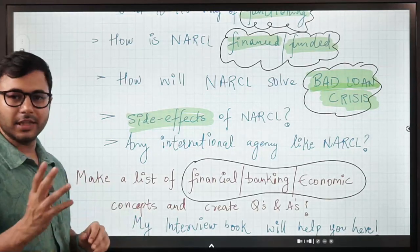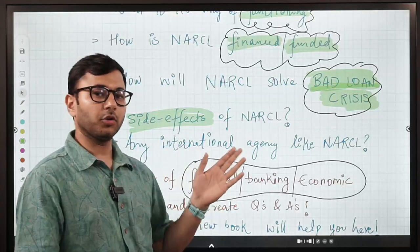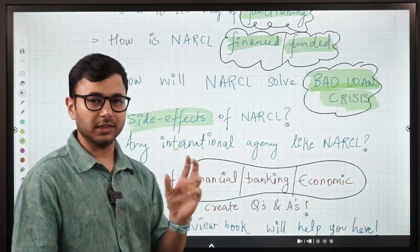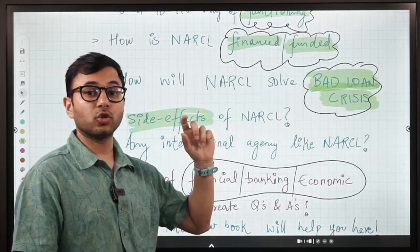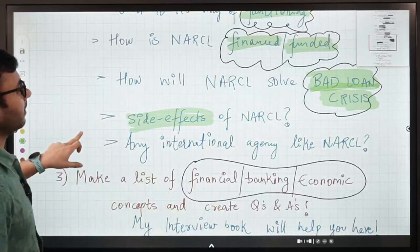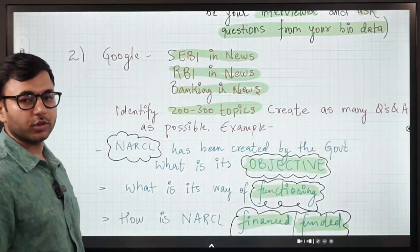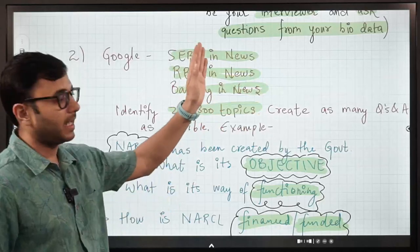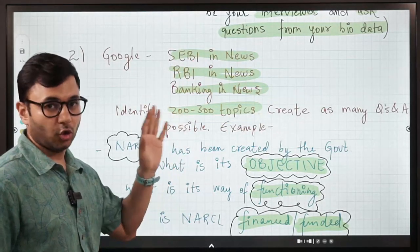About ten questions we could have created very easily from NARCL. Now you figure out answers of these questions and write them down. You have to identify 200 to 300 topics, and then from those topics you make questions and answers. This is your job.